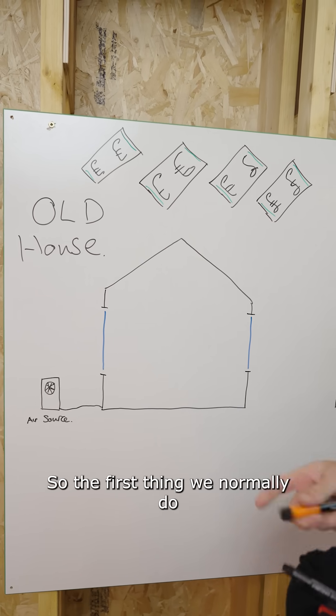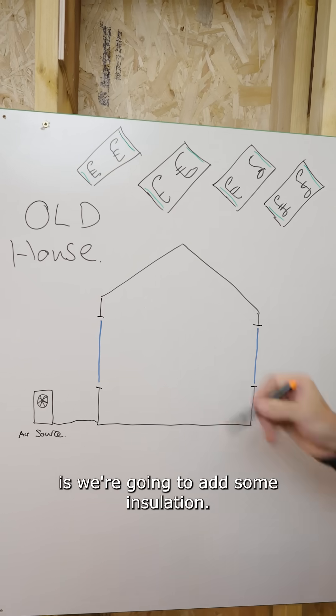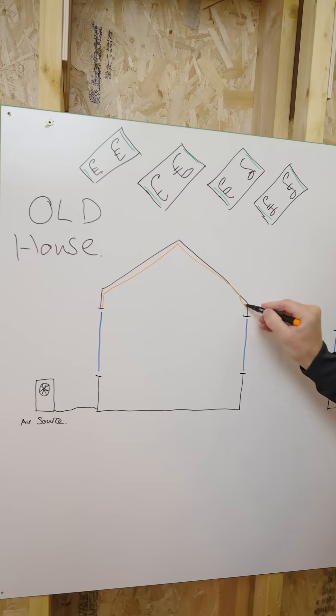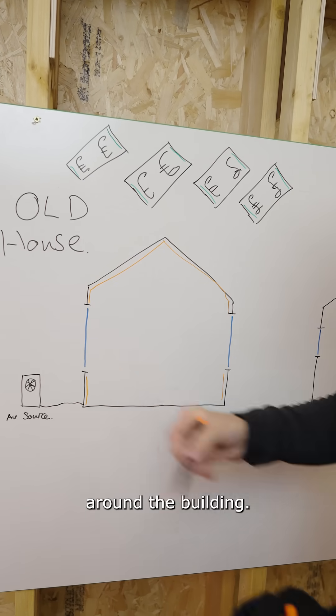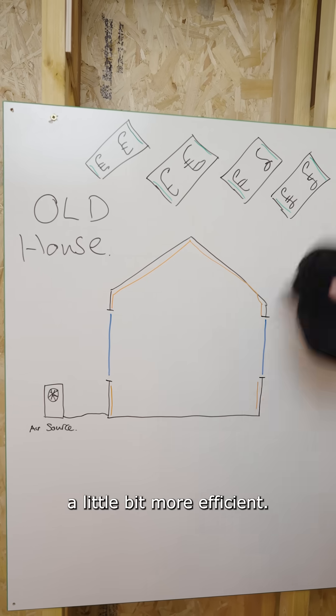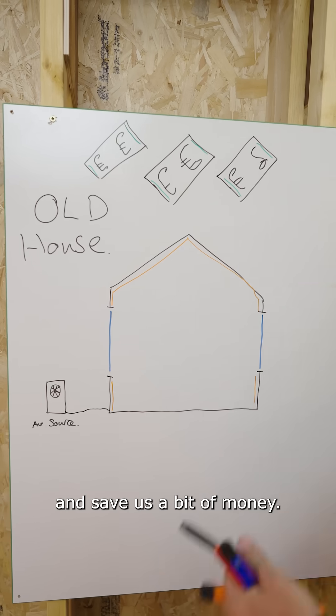The first thing we normally do is add some insulation. We add our insulation up, going around the building. We've added our insulation, which is going to make this building a little bit more efficient. It's going to save us a bit of money.